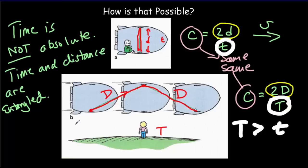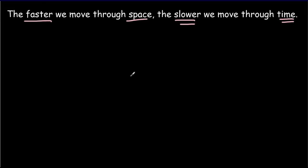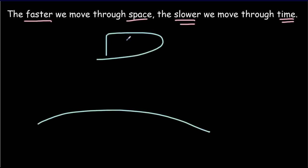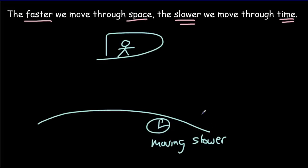Time and distance are going to have to be entangled. If everybody measures the same speed of light, time and distance have to be connected — they have to be the same sort of stuff, entangled. We have a special name for that entanglement: spacetime. Space and time are kind of the same stuff. The faster we move through space, the slower we move through time. If a rocket ship is moving through space, an observer on it would see the clocks on Earth moving slowly, and the faster the rocket ship passes, the slower those clocks move.